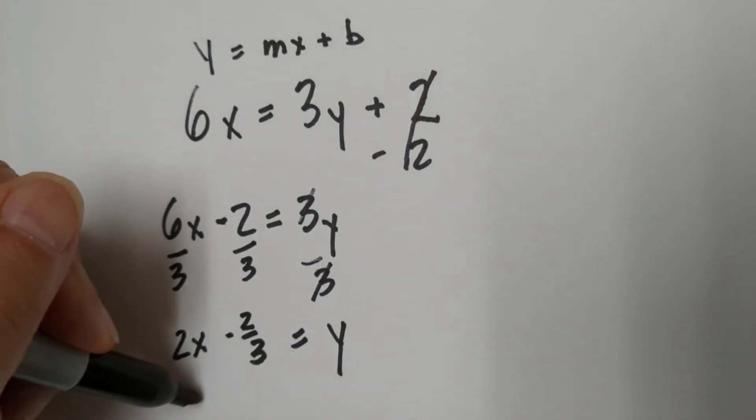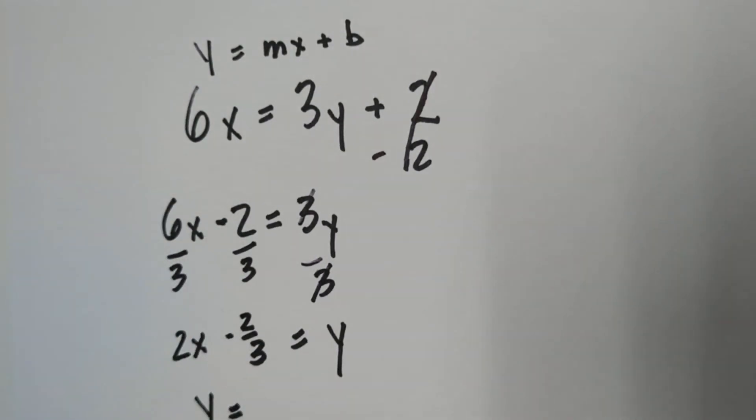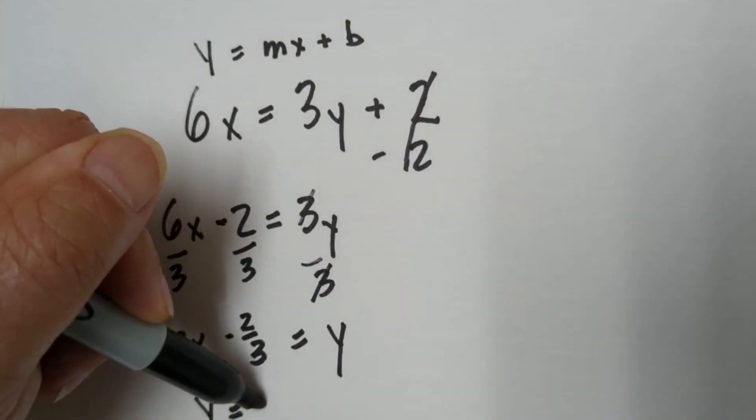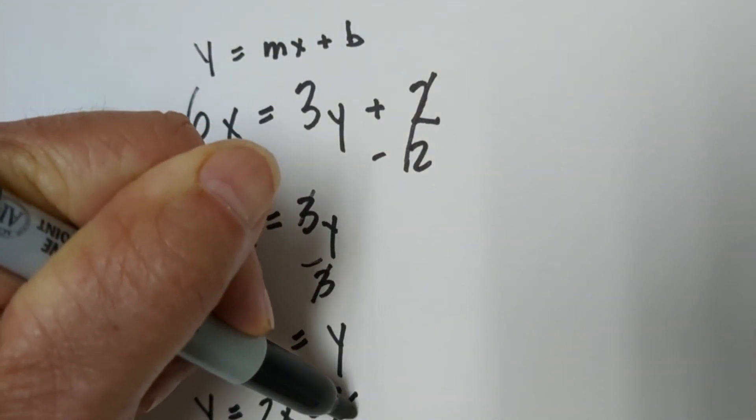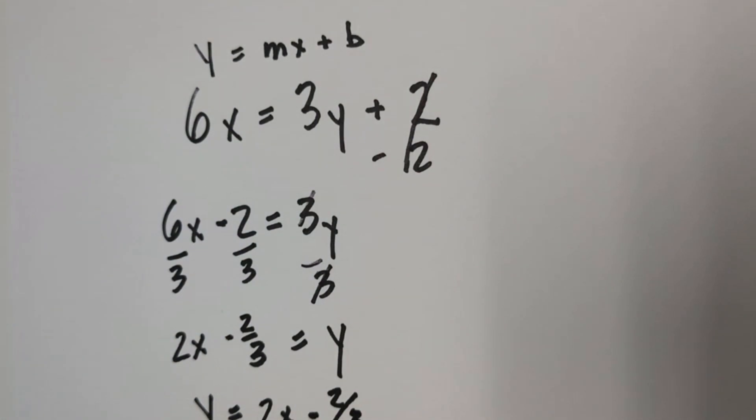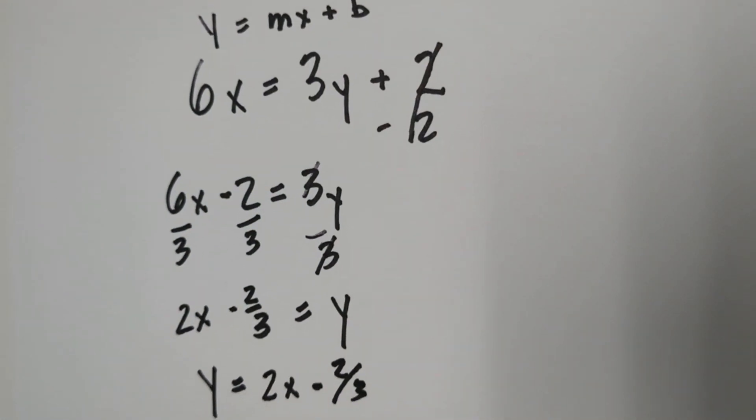And then if you'd like, you can just move the y to the other side. So y is equal to 2x minus 2 thirds. So there we go.